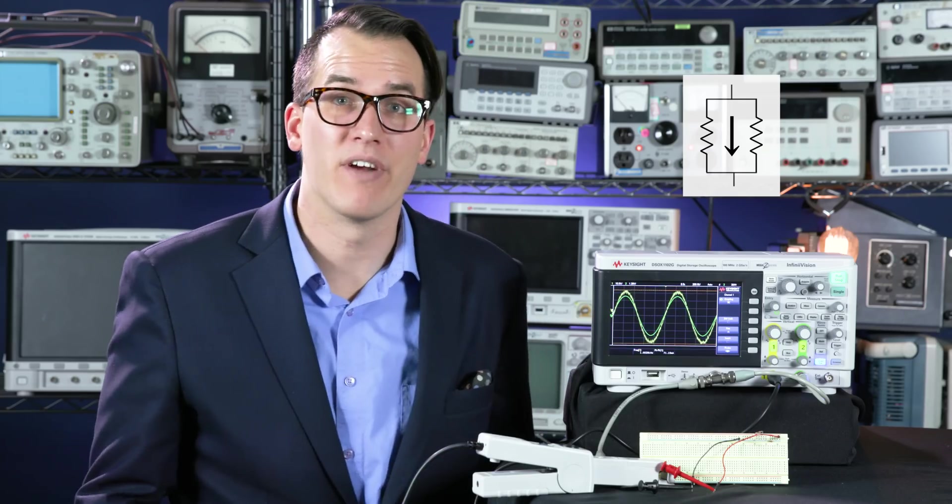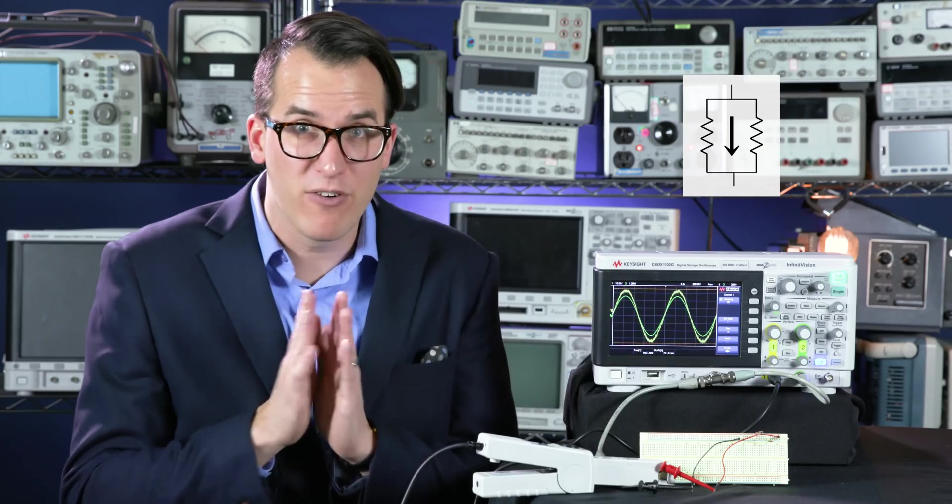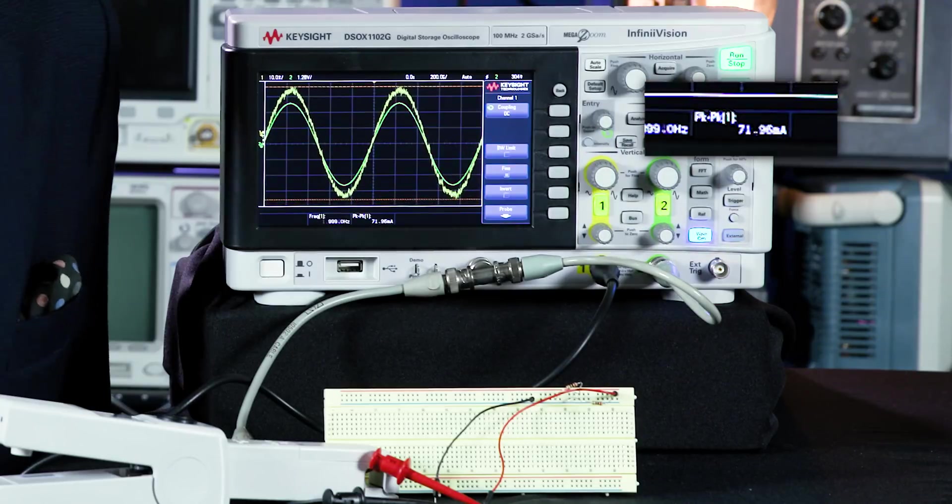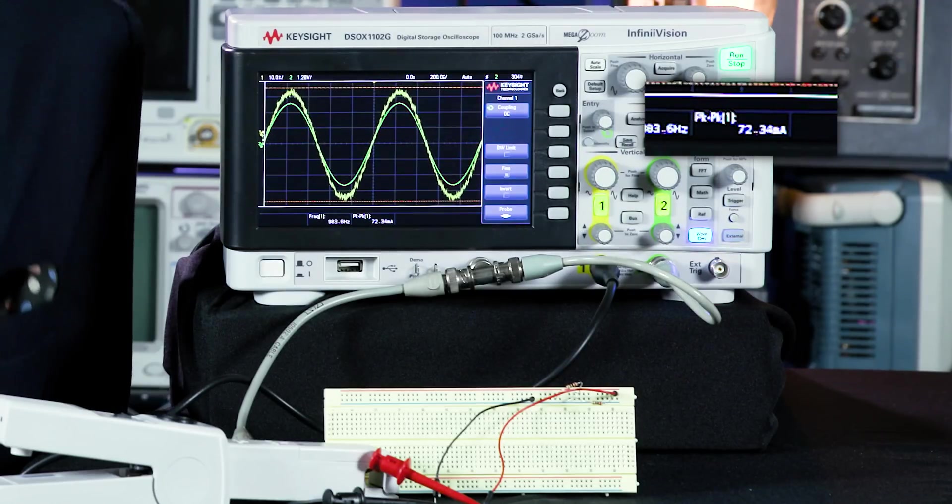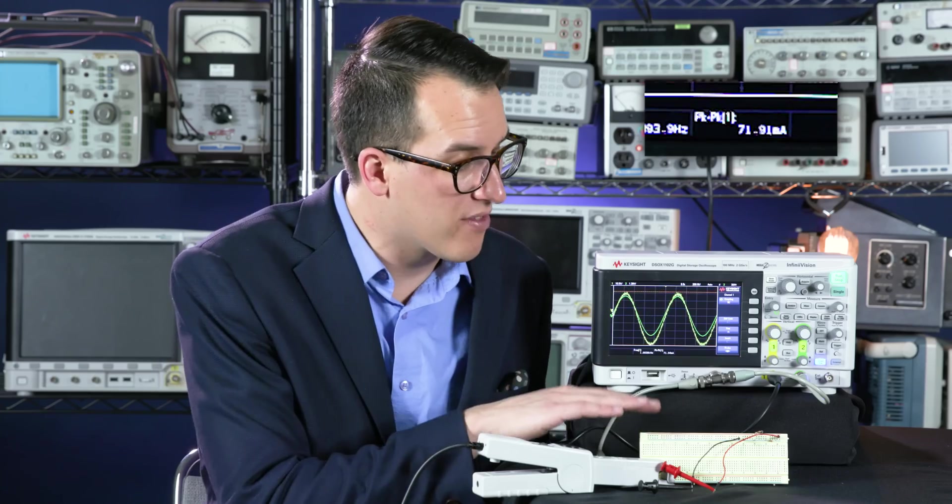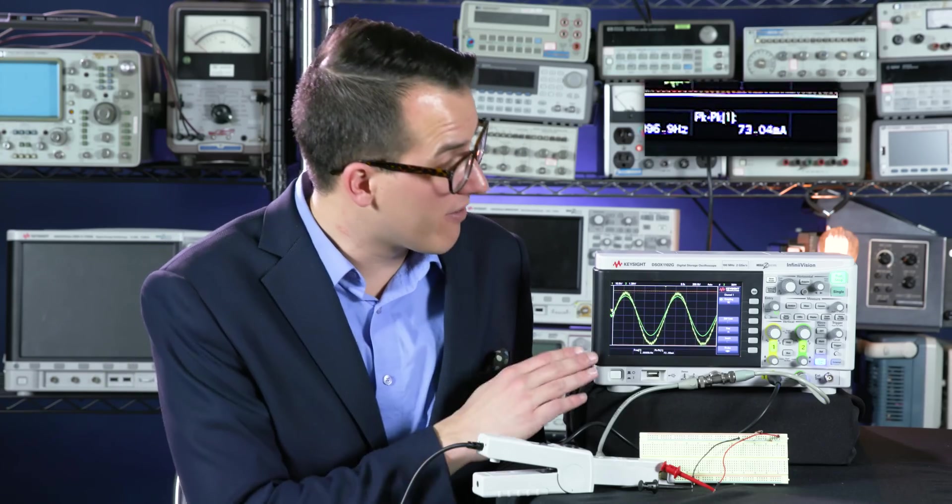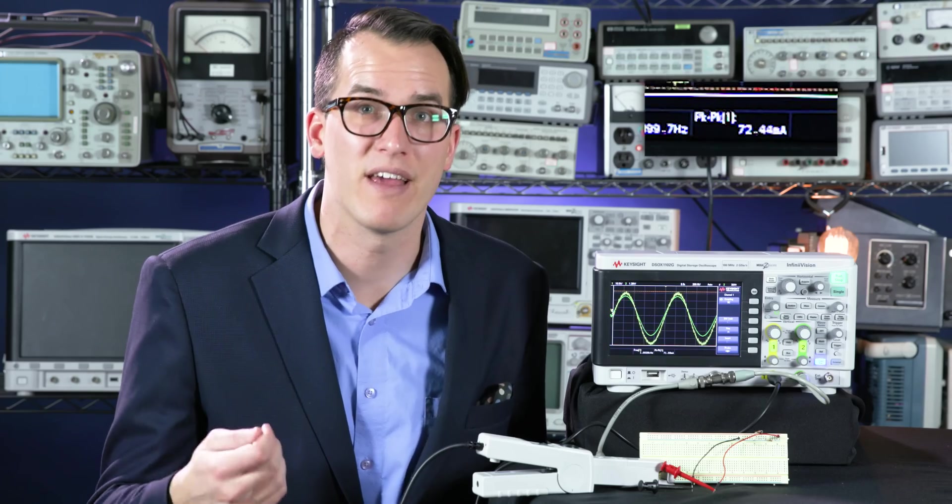Now I've added an identical resistor in parallel, so current is going to flow equally through both of them. Looking at my measurements, I'm now seeing about 73 milliamps of current. So you can see that if I half the resistance by putting two resistors in parallel, like we talked about in the last video, and provide the same voltage, I'm actually getting twice as much current flowing through these resistors.